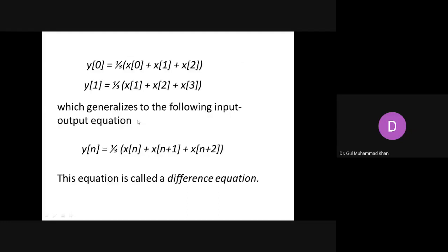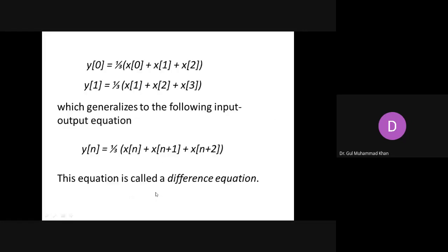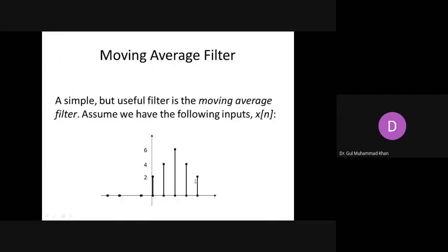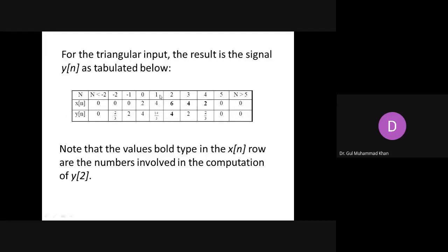All values before minus two are zero. At minus two, zero plus zero plus two gives two-thirds. You keep moving similarly, and from the last point onward it becomes zero. So this is the input and this is the output of this particular moving average filter.